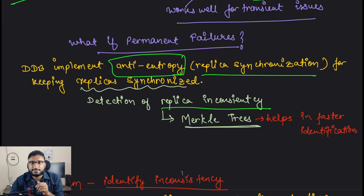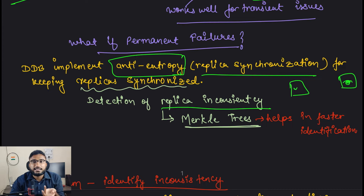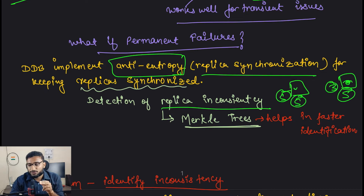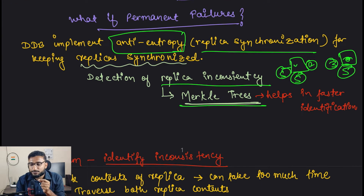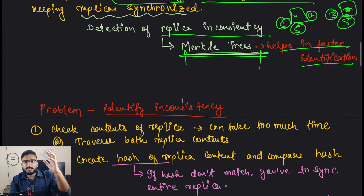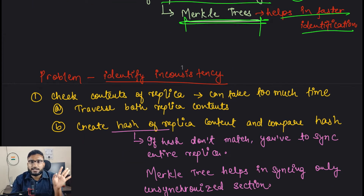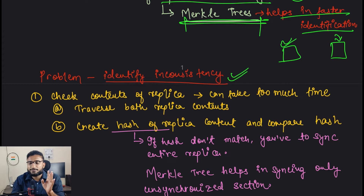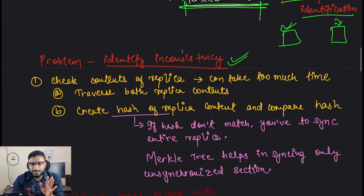You have two nodes where certain data should have been replicated on one but wasn't. You have to figure out what specific data is missing. For this purpose we use Merkle trees, which help in faster identification of inconsistencies. You have two replicas - this is the most recent replica and this might be an older replica - and we need to figure out if there is any inconsistency between them.